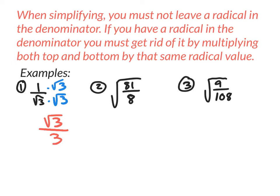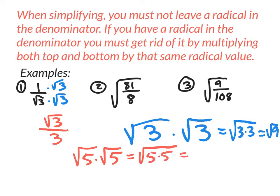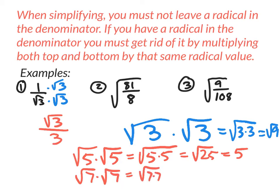Let's go over some practice problems. What is the square root of 3 times the square root of 3? You could put them together: that's the square root of 3 times 3, which is the square root of 9, which is 3. What about the square root of 5 times square root of 5? That's the square root of 25, which is 5. What about the square root of 7 times the square root of 7? That's the square root of 49, which is 7.